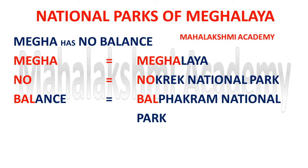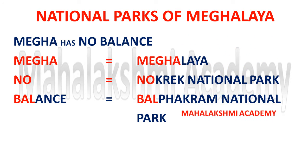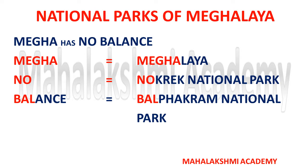First we are with Meghalaya. The national parks situated in Meghalaya can be learned with the short code: 'Mega has no balance.' 'Mega' will remind you this code is related to Meghalaya. 'No' stands for Naukha National Park, and 'balance' stands for Balpakha National Park. So there are two national parks in Meghalaya.